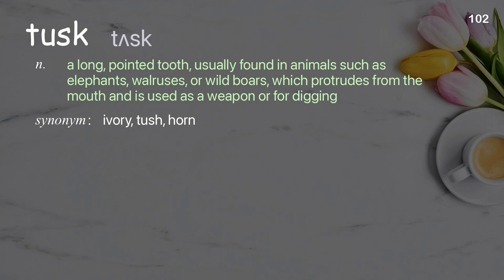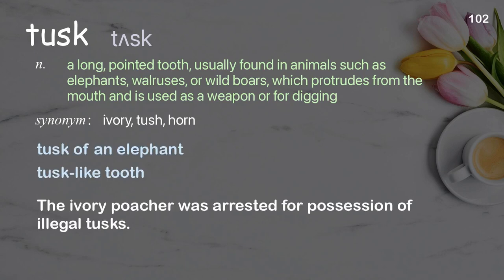Tusk: a long, pointed tooth, usually found in animals such as elephants, walruses, or wild boars, which protrudes from the mouth and is used as a weapon or for digging. Examples: tusk of an elephant, tusk-like tooth. The ivory poacher was arrested for possession of illegal tusks.